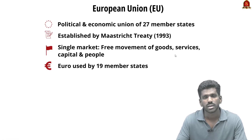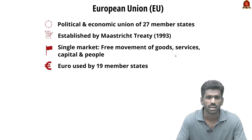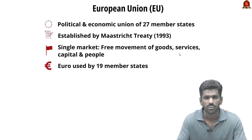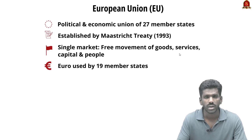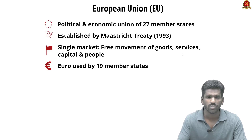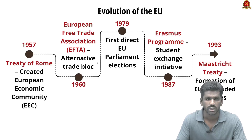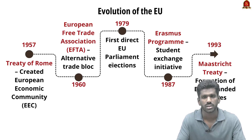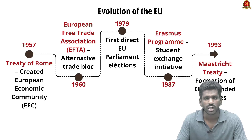The European Union is a political and economic union of 27 member states located in Europe, established by the Maastricht Treaty of 1993. It aims to promote economic and political integration for stability and growth. It has a single market ensuring free movement of goods, services, capital, and people. The common currency is the euro, used by 19 member states. The European Economic Community (EEC) was established in 1957 by the Treaty of Rome to create a common market.